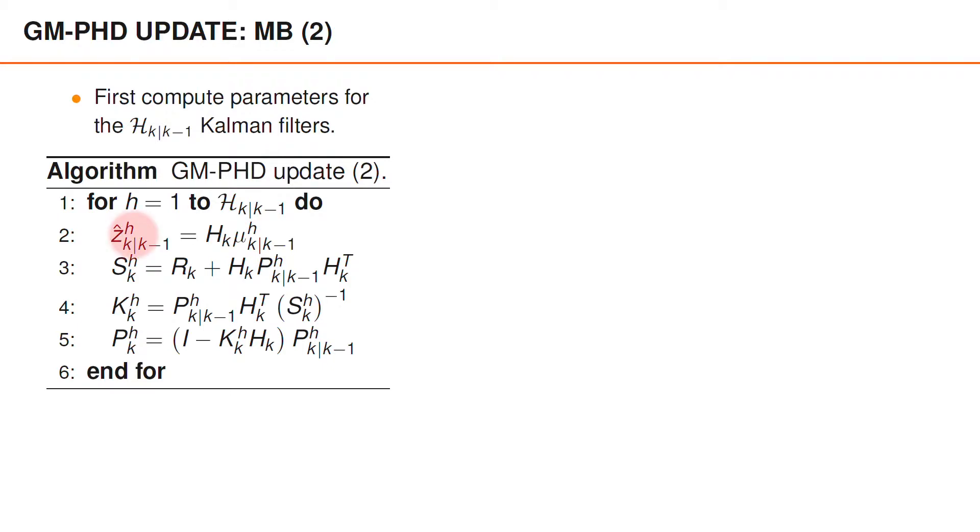and compute the predicted measurement z hat h, the predicted measurement covariance sh, the Kalman gain kh, and the posterior covariance ph. All of these are computed in a standard Kalman filter update. Note that all of these depend on h, since they depend on muh and ph k given k minus 1.